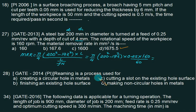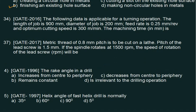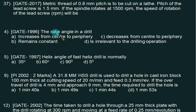Reaming is a process used for finishing an existing hole. Rake angle in a drill increases from center to periphery. Helix angle for a fast helix drill is usually 35 degrees.